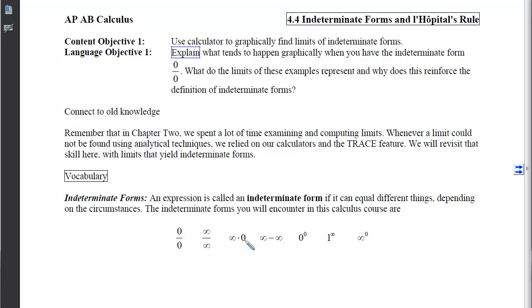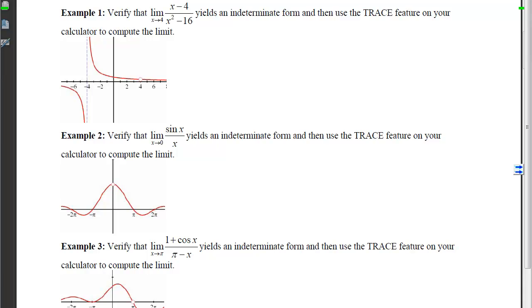Multiplying by 0 doesn't always give me 0. Subtracting infinity from infinity, these infinities can be different sizes. We have to keep all of this in mind when computing what these indeterminate forms actually equal in specific scenarios. Now let's look at four different examples, all of which will require us to verify that the limit yields an indeterminate form, and then we'll use the trace feature on our calculator to compute the limits.